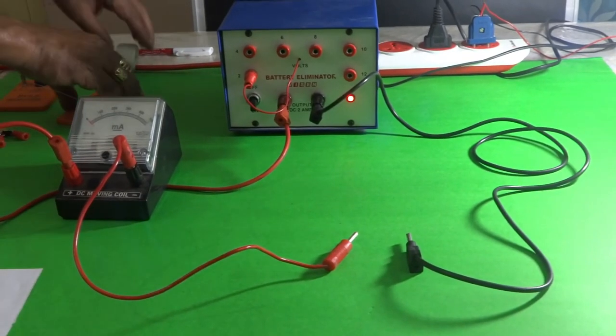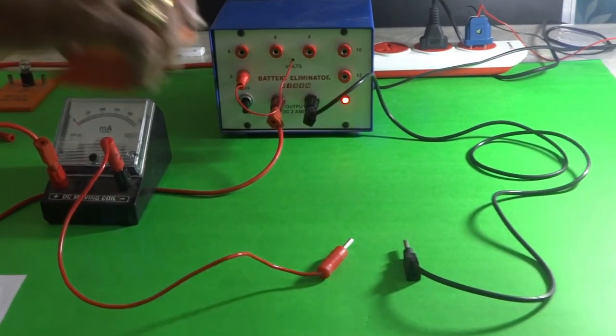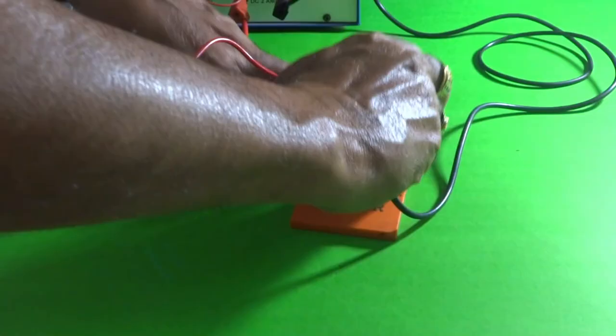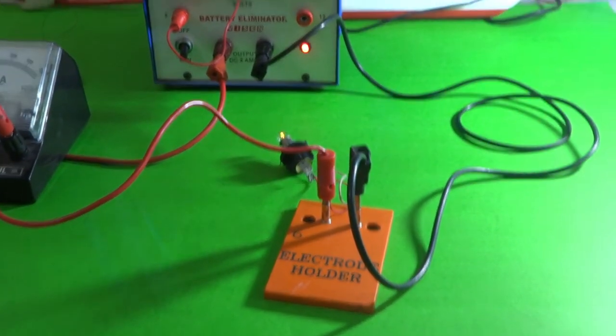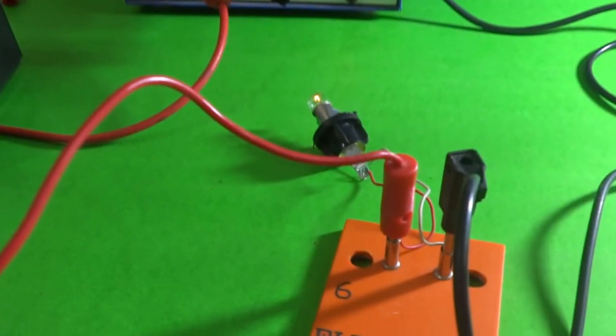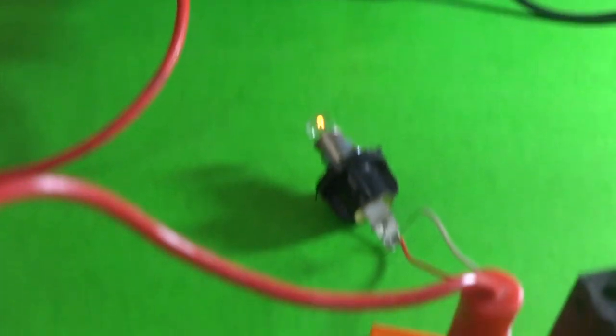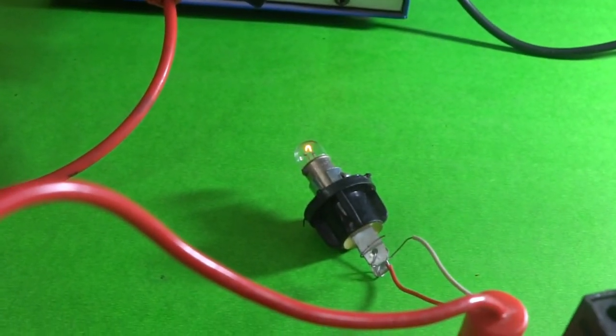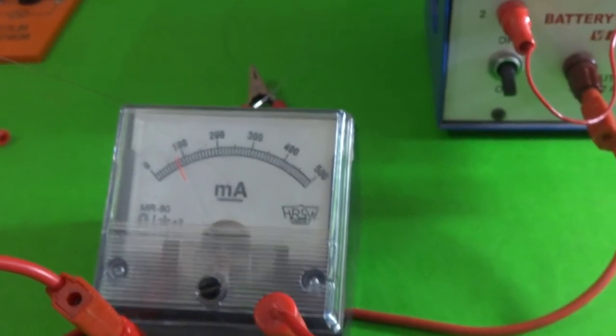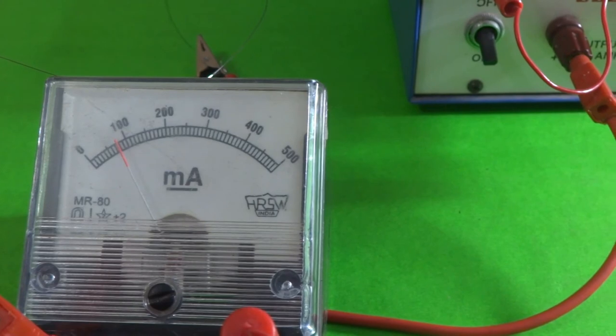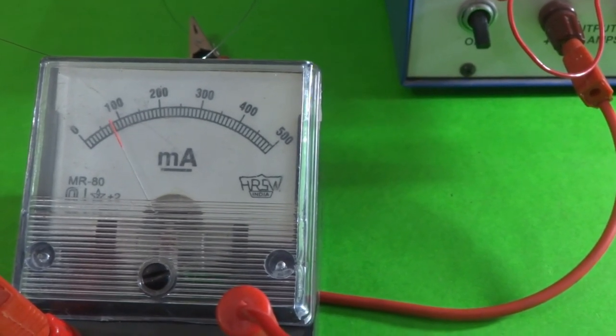So now first let us connect this bulb. You can see the bulb glows with very low intensity and here the milliammeter is showing around 90 milliamperes.